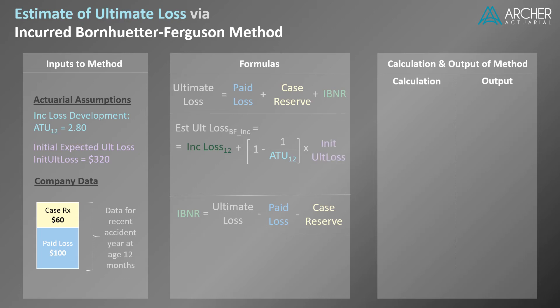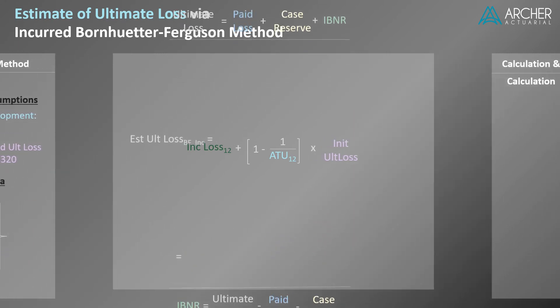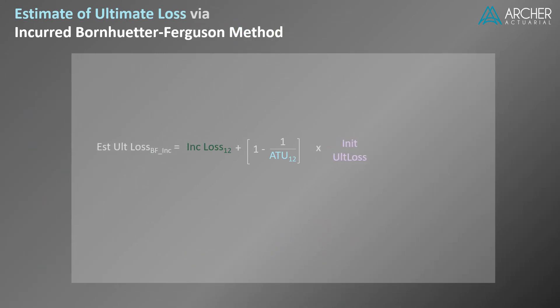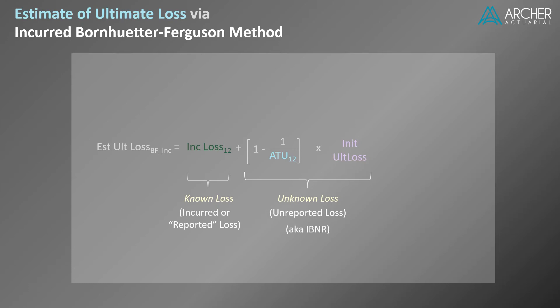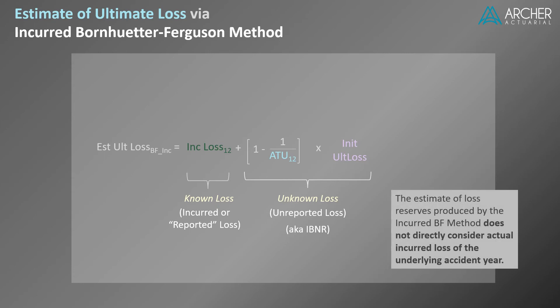Let's take a closer look at the formula. As we discussed previously, the general form of the BF method can be broken down into known loss and unknown loss. For the incurred version of the BF method, the sections equal incurred loss — also known as reported loss — and unreported loss. Another name for unreported loss is IBNR. We can see from this formula that the estimate of IBNR produced by the incurred BF method does not directly consider the actual incurred loss of the underlying accident year.